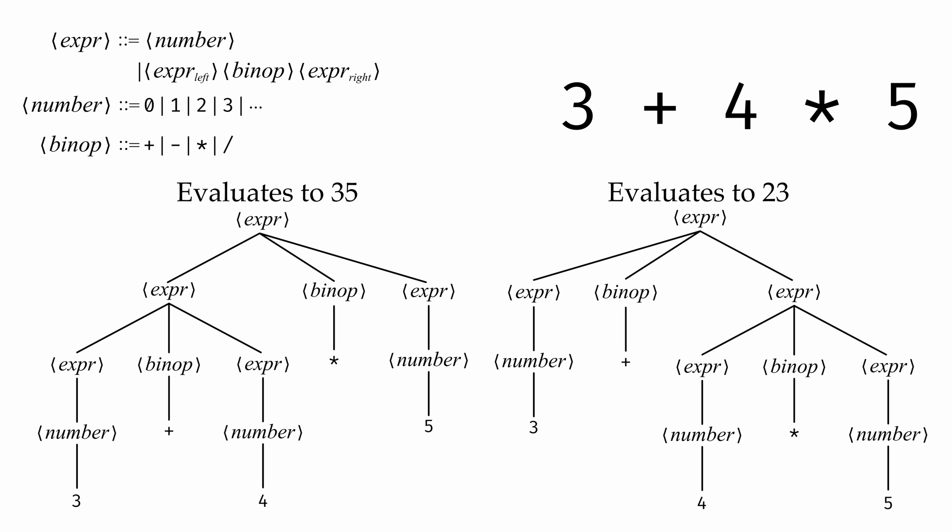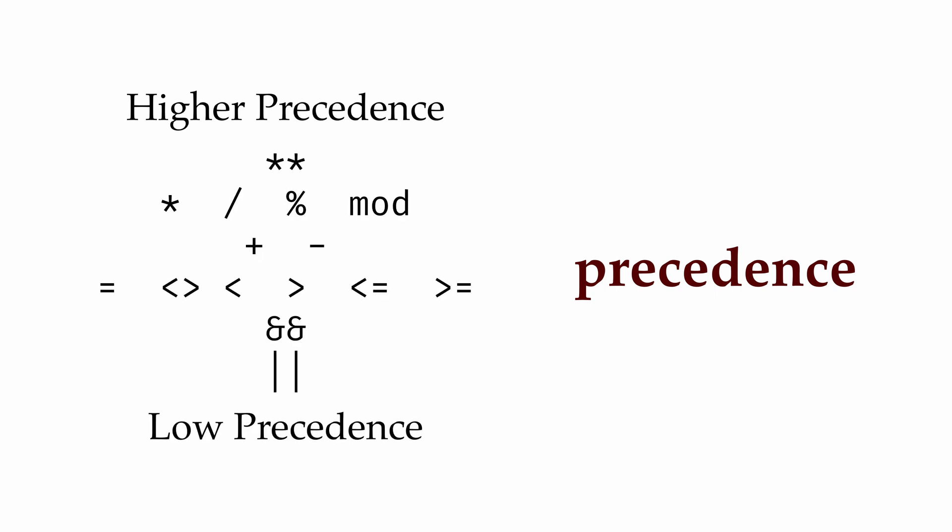Programming languages deal with this in a number of ways. One way is via precedence, with some operators taking precedence over others. In OCaml, the multiplication operator takes precedence over the addition operator. So the expression 3 plus 4 times 5 is interpreted as 3 on the left and 4 times 5 on the right.